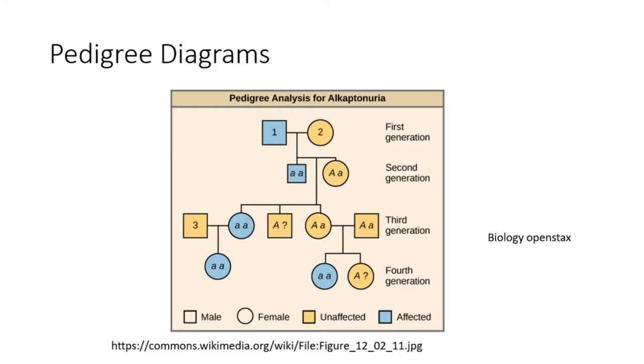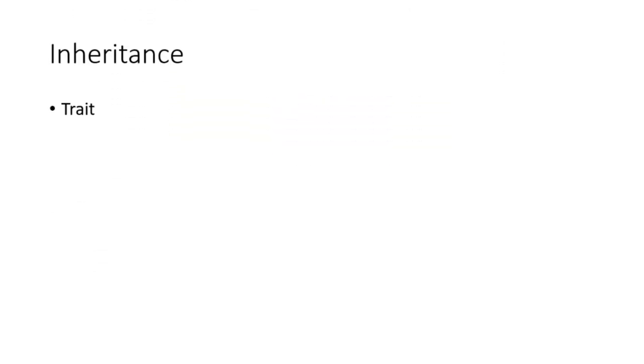A pedigree is a diagram used to trace family lineages and identify the pattern of inheritance in a family. Males are represented by squares, whereas females are represented using circles, as shown above.